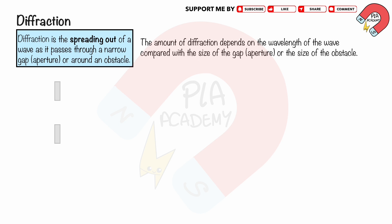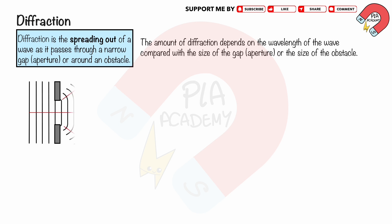When straight wave fronts encounter a gap, or aperture, in a barrier, they pass through and diffract, spreading out into the region beyond. The wave fronts curve at the edges of the gap, while the central portion remains relatively straight. The curved areas are diffracted, while the central area is not diffracted.